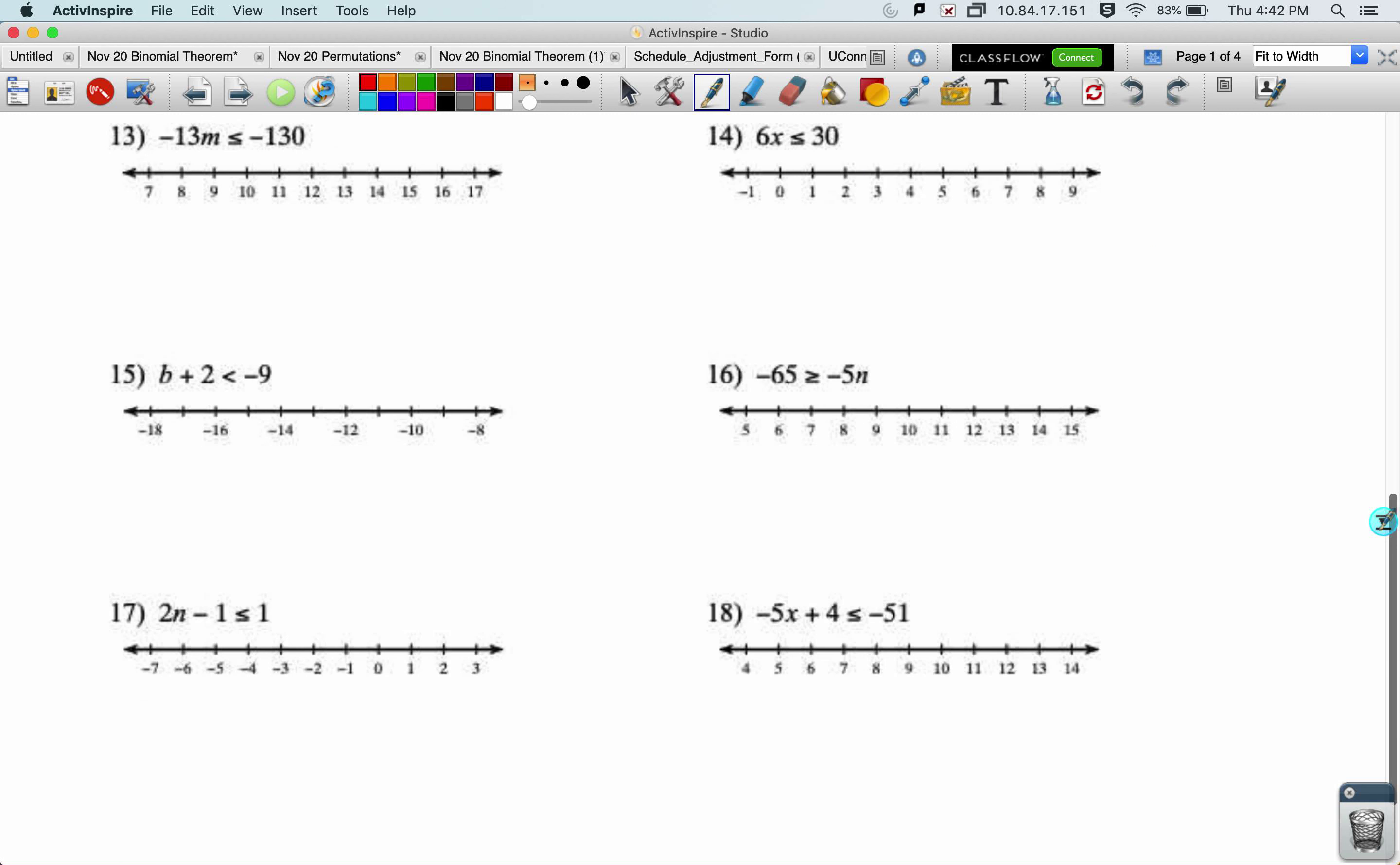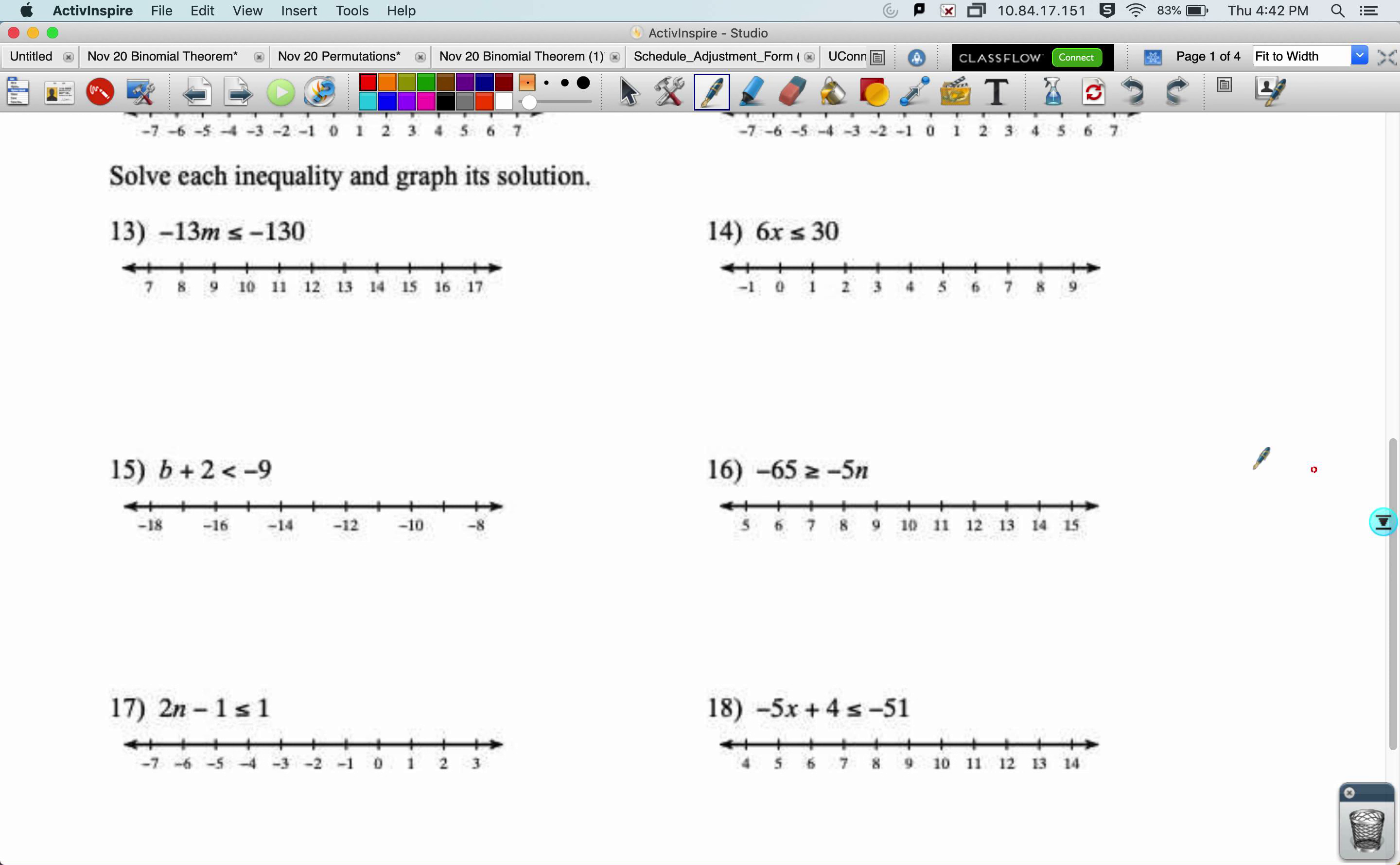All right, when solving an inequality, the rules are pretty much the same as solving an equality, or an equation is what we call that, with this one big caveat that if we ever divide or multiply by a negative, we must flip the direction of the inequality. That happens right here in problem number 13. To get rid of this negative 13, I have to divide both sides by negative 13, because it's multiplying our variable, and that's how we undo that. But since I divide it by a negative, instead of being a less than or equal to, it flips to being a greater than or equal to. And this side's going to be a 10.